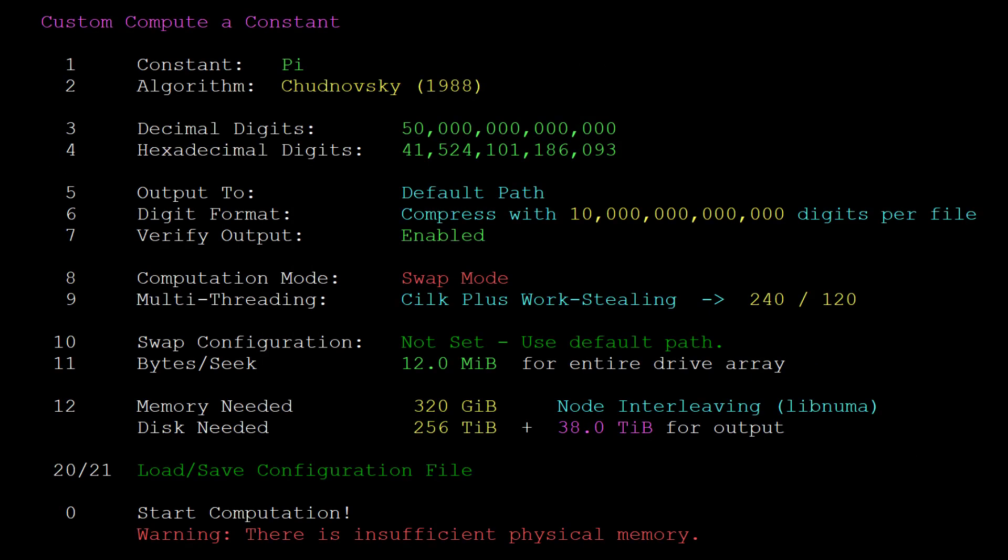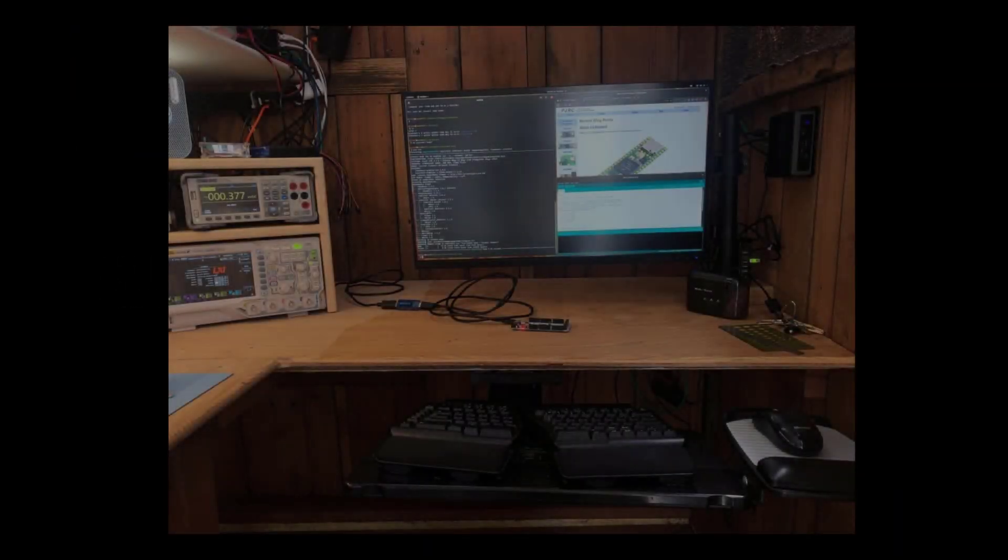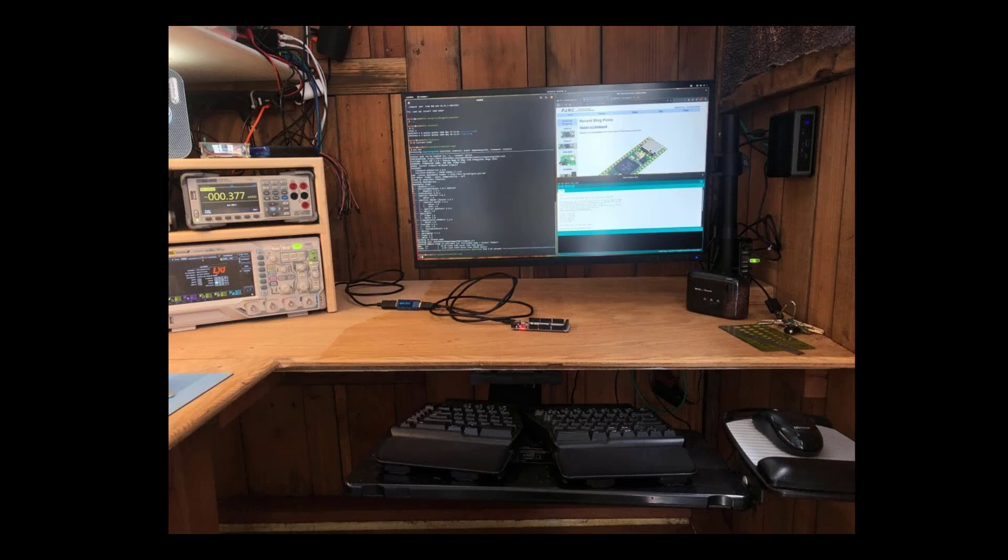On January 29, 2020, Timothy Mulligan set the newest Guinness World Record for the most accurate value of Pi. After a grueling 10 months of computation running from April 2019, he calculated 50 trillion digits of Pi on a dated but still powerful personal computer.